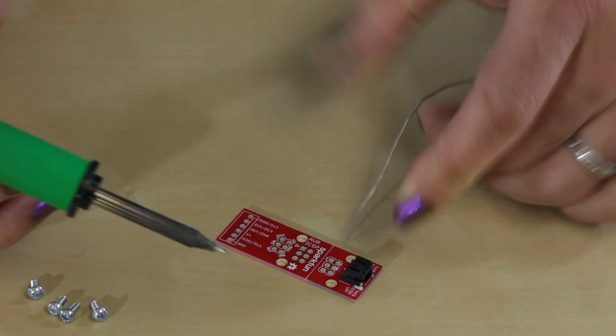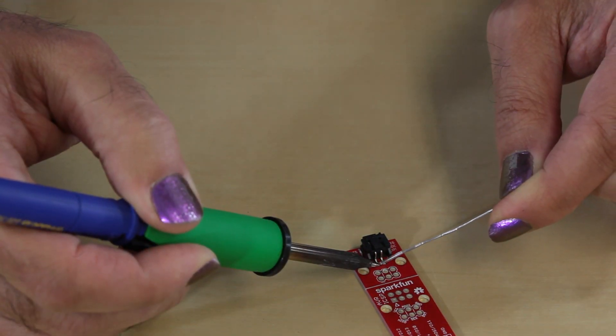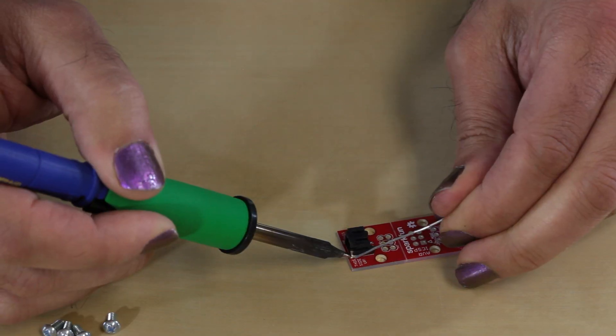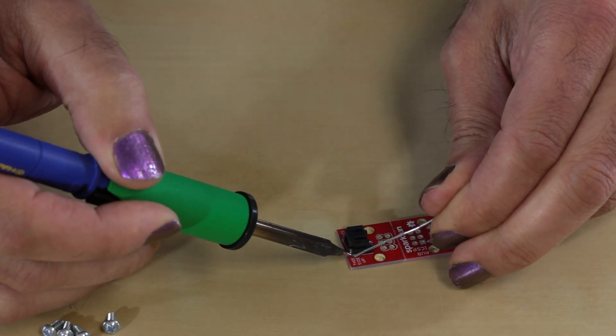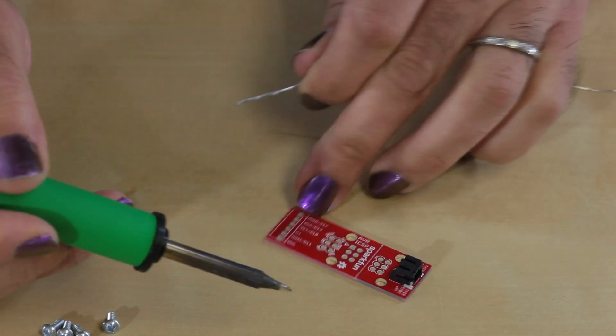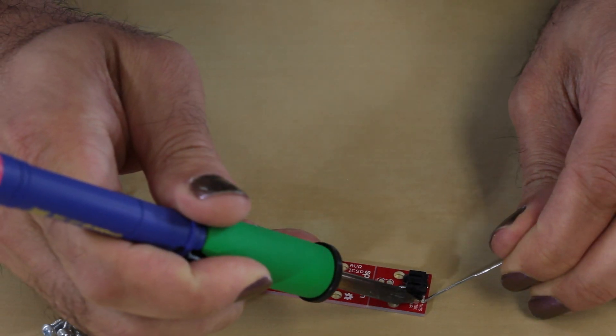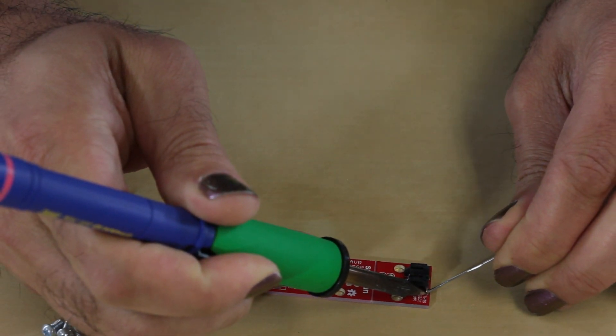Then touch each other pad, a little bit of solder on there, a little bit of solder on that one for some structural support, same deal over here, and you're done.